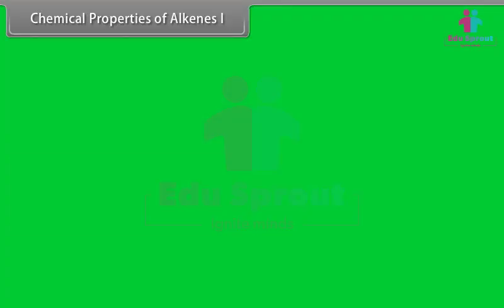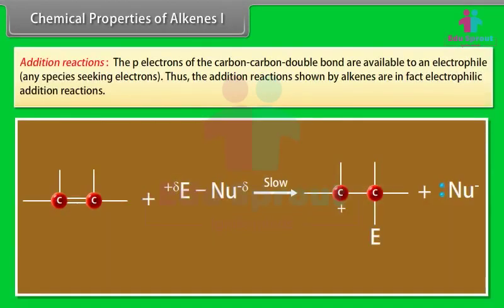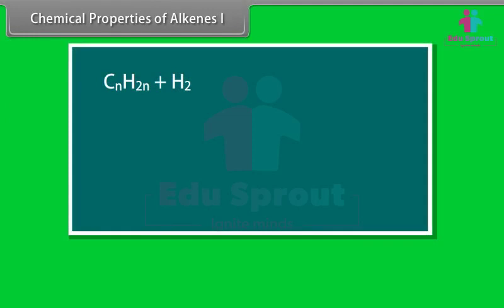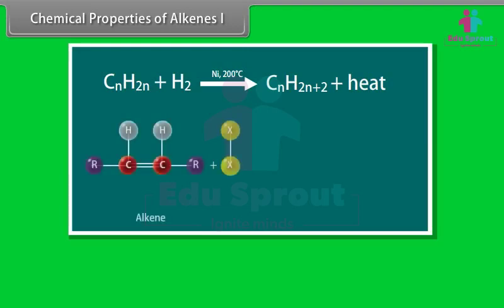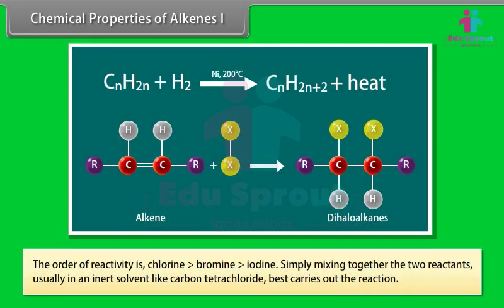Chemical Properties of Alkenes: Alkenes are more reactive than alkanes due to the presence of a double bond. The carbon-carbon double bond consists of a strong sigma bond and a weak pi bond. The pi electrons are available to an electrophile, so the addition reactions shown by alkenes are electrophilic addition reactions. Addition of Hydrogen: alkenes add hydrogen in the presence of platinum or nickel catalyst to form alkanes — a reaction termed hydrogenation, which is exothermic. Addition of Halogens: alkenes react with halogens to form dihaloalkanes. The order of reactivity is Cl2 > Br2 > I2. The reaction is usually carried out in an inert solvent like carbon tetrachloride.